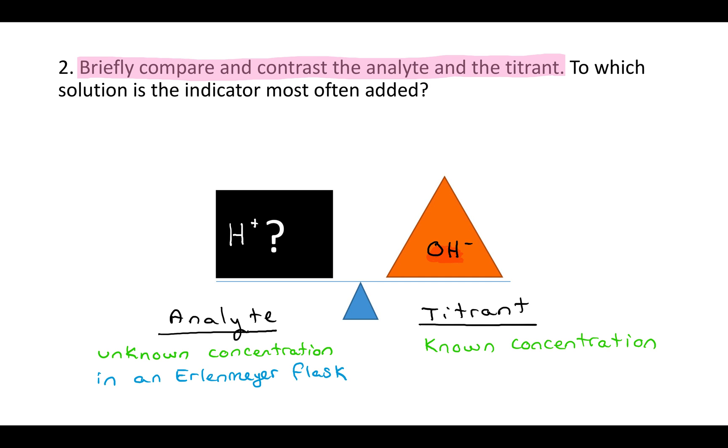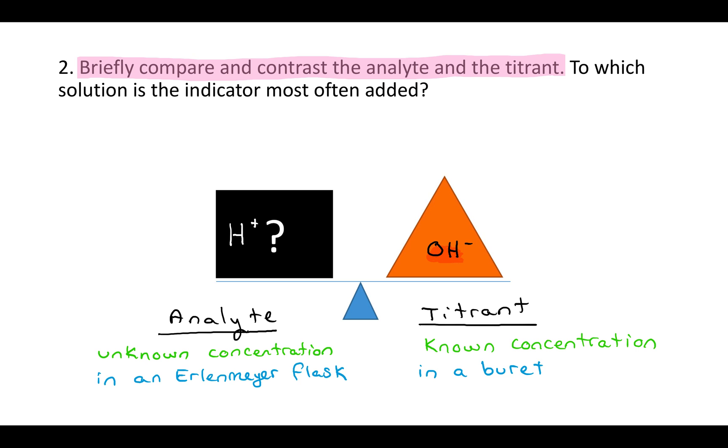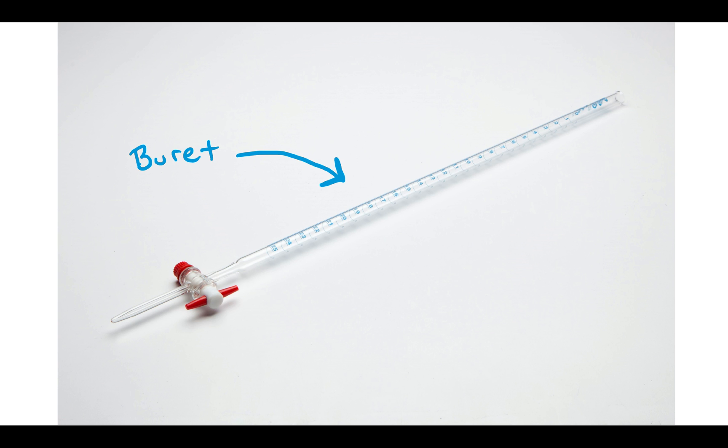Another difference is that the analyte usually goes in an Erlenmeyer flask. If you remember, this is what an Erlenmeyer flask looks like. It sort of tapers at the top, unlike a beaker, which just goes straight up. This tapers at the top to make it easier to stir the solution, swirl it with your wrist without it splashing all over the place. And the titrant goes into a piece of glassware called a burette. That's this. It's a very long, thin piece of glassware with a lot of lines on it. The knob at the bottom either lets you open or close a hole that would allow water to go through into the Erlenmeyer flask that you're titrating it into.